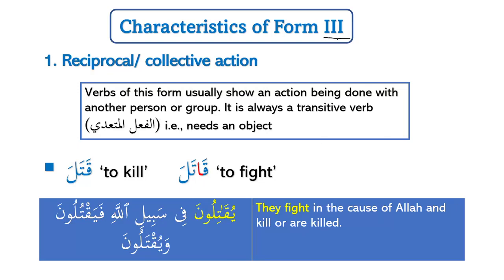Form 3 has one key characteristic: it is reciprocal or expresses collective action. Verbs of this form usually show an action being done with another person or group. It is always transitive (فعل متعدٍّ) and always needs an object. The defining quality is that this form normally involves two parties — one is generally the doer of the action, and the other is the receiver.